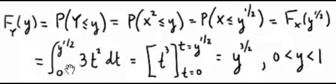And then we're going to integrate until t is equal to y to the 1 half the pdf of x or pdf of t, which is 3t squared dt.